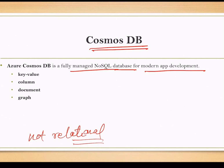Not relational means that you are not locked into a schema for your data. When we talk about relational databases, we are storing our data into tables with a specific schema, and the data is related to other data. There are four kinds of NoSQL database systems.